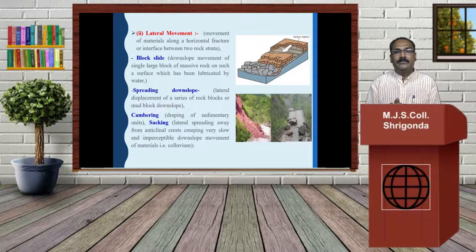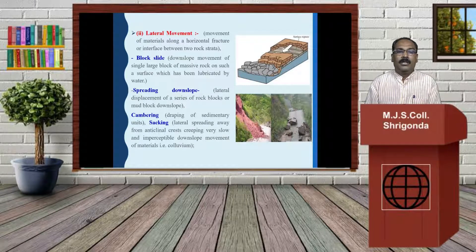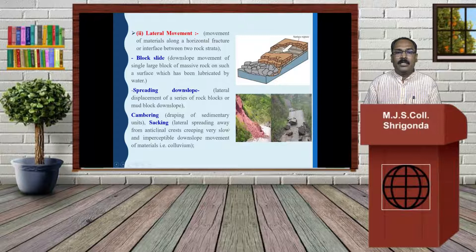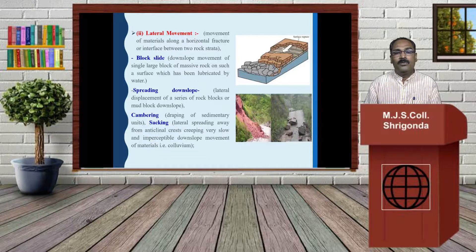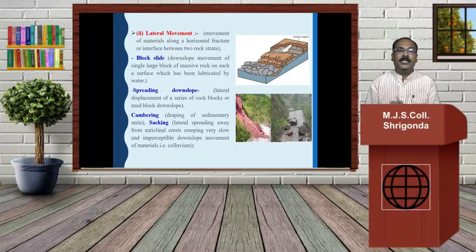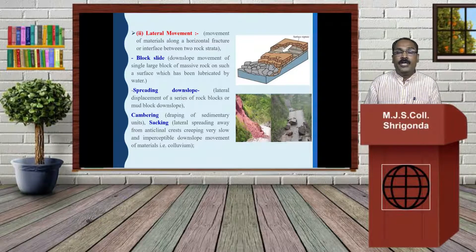Second, lateral spreading away from anticlines — crescent grippings. Very slowly and imperceptible downslope movements of material that is polyform.